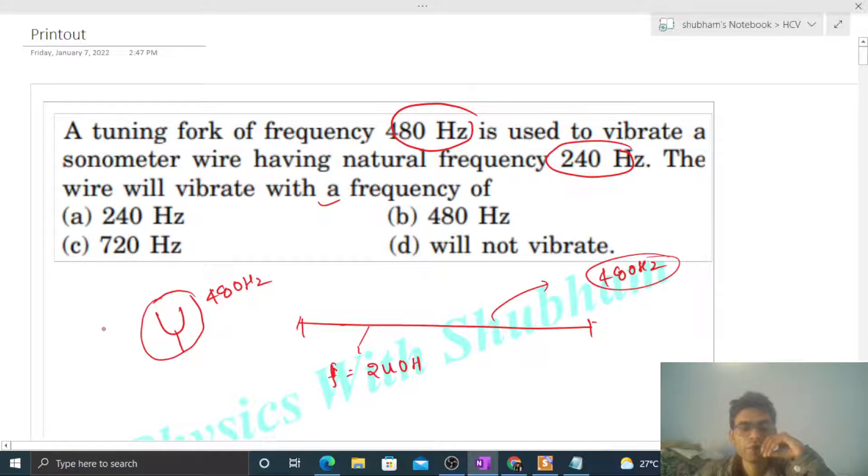So the tuning fork's prongs oscillate with a frequency of 480 Hz. And with the tuning fork, we generate waves in the wire by touching it at a point on the wire.